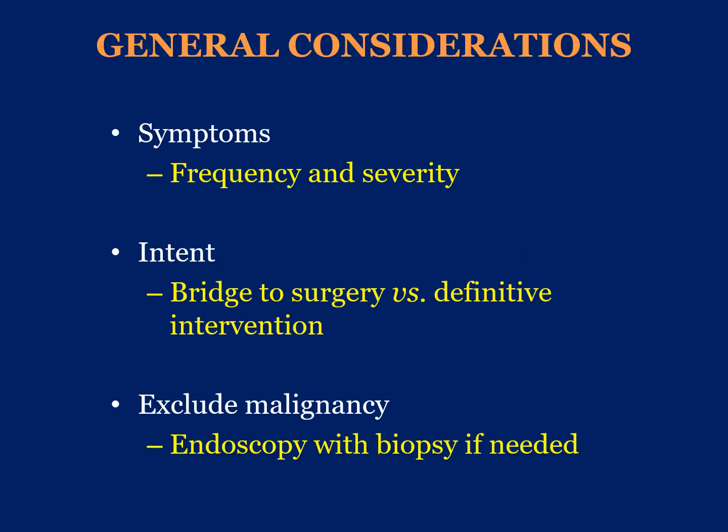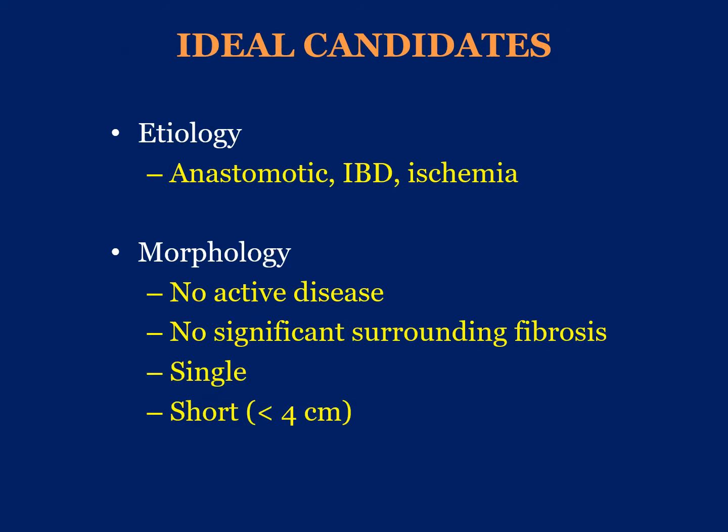When selecting a patient, determine the type of symptom, frequency, and severity. It's important to define whether balloon dilatation will be a temporizing measure to bridge the patient to future surgery or a definitive intervention. It's important to exclude malignancy, especially in patients with long-standing inflammatory bowel disease, so anything suspicious on colonoscopy should be biopsied. The ideal candidates are patients with an anastomotic type of stricture, select patients with inflammatory bowel disease, or ischemia.